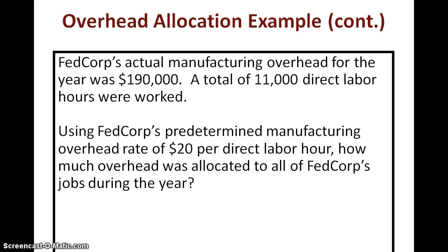Let's continue this example — be sure to pause the video so you can read the question. Here they're asking how much manufacturing overhead was allocated to all of FedCorp's jobs during the year. The formula is: predetermined manufacturing overhead rate multiplied by the actual amount of allocation base used. In this case, our allocation base is direct labor hours, so we need how many actual direct labor hours were worked during the year, as those hours would have been spent on all jobs occurring during the year.